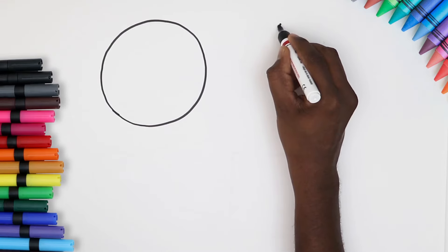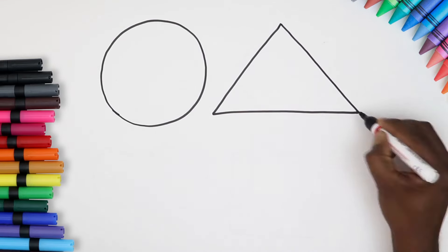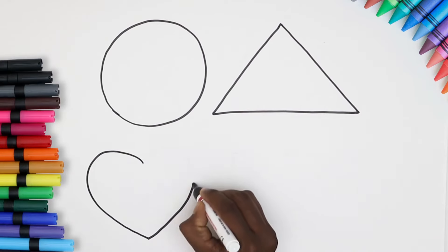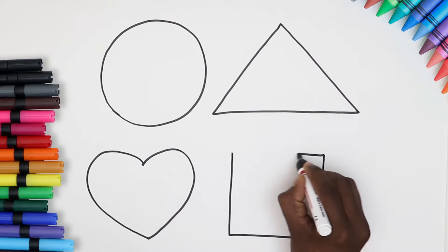Draw a circle and then a triangle. Yes! Great! Can you guess the next one? It's a heart and the last one a square. Wasn't it easy?